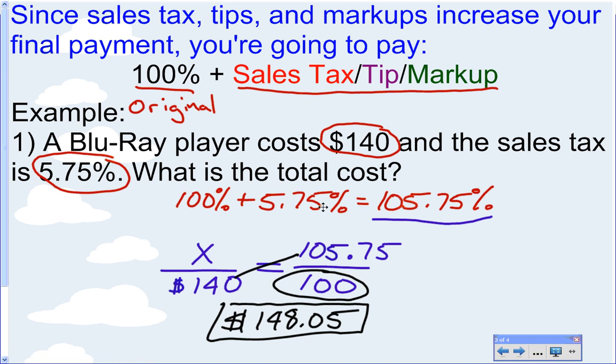Now, an additional question I could ask you now is, well, how much was the tax? The Blu-ray player was $140. I paid $148.05. So, hopefully, you can see that the difference between these two amounts is $8.05. And that's my tax. I can just subtract those to find out what that is.